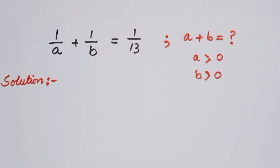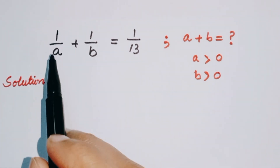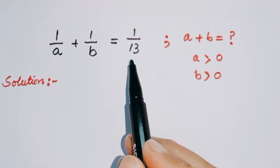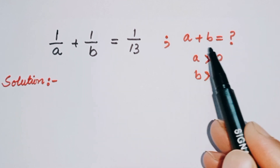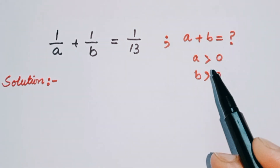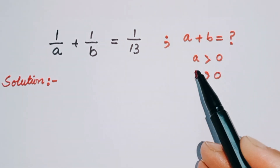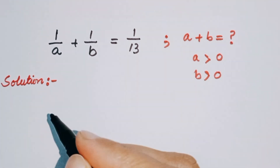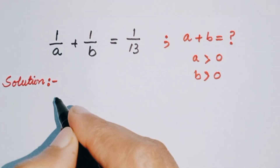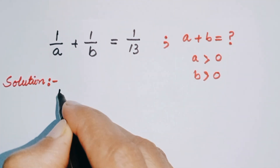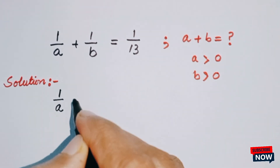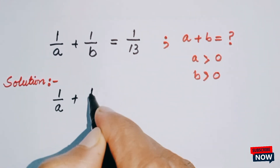Hello everyone, welcome back to Brain Equations. Today we are going to solve a question: 1 over a plus 1 over b is equal to 1 over 13. We have to calculate a plus b, and the given conditions are a is greater than 0 and b is greater than 0. So let's begin.